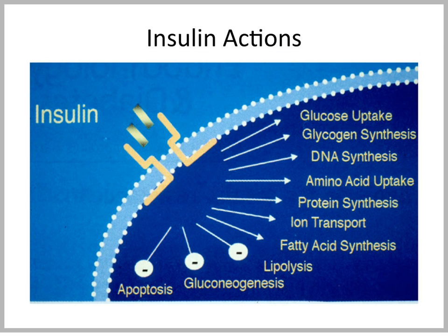Insulin is the major anabolic hormone. It leads to synthesis of glycogen, protein, and fatty acids. It also leads to ion transport, in particular potassium transport. This is used clinically to decrease potassium concentrations when potassium may be very high and life-threatening,